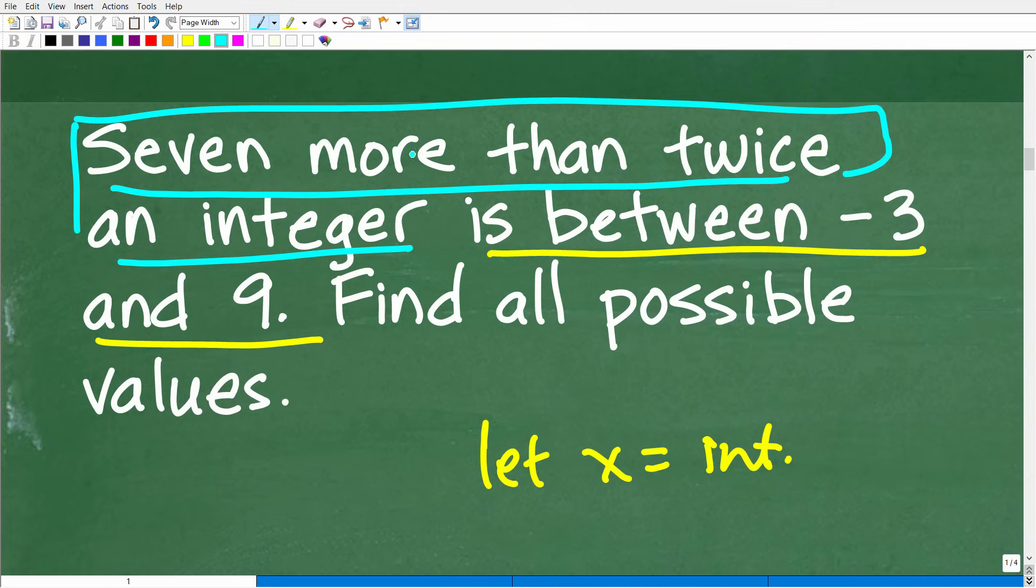We'll set up an inequality once we have this part constructed from an algebraic standpoint. So seven more. What does this mean? We're going to take seven and add it on to something. But what are we going to add it on to?